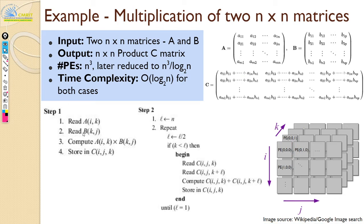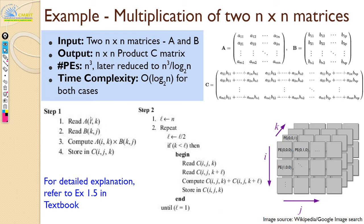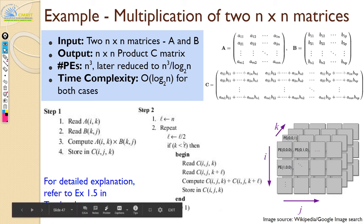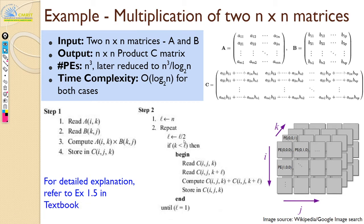This is the algorithm step. The parallel algorithm is going to look like this: each processing element reads its respective element A and element B, does the product, and stores the result in shared memory. Step two, you do the parallel addition. Here you are doing the L/2 path, which takes care of reducing it by half, and then you keep adding.